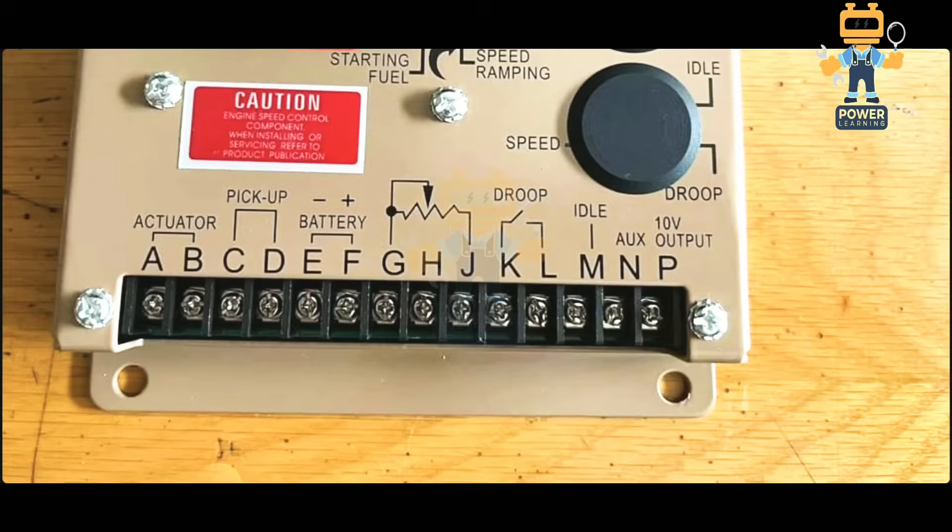After that, here we have K and L. This is for droop activation. If you are using this engine with droop function, you can connect your switch here for droop activation. If you close the switch, droop function is activated. If you open the switch, the droop functionality is off. After that, idle is on number M. Idle speed you can select from the idle terminal - you can connect cable here on idle and you can select the idle speed.